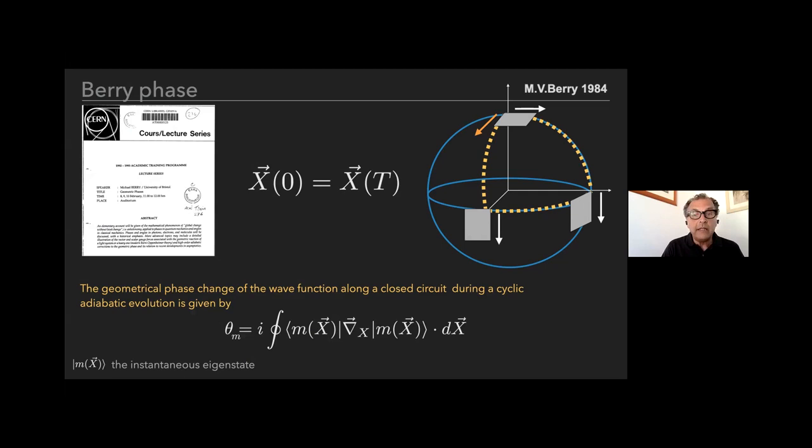The starting point is the seminal work by Berry that showed that if you take a quantum system and drag it along with a slow change in some external parameters and go back to the initial values of these parameters, then the system goes back to the same eigenstate but not quite, up to a phase. It will have a dynamical phase but also an extra piece which is of geometric nature.